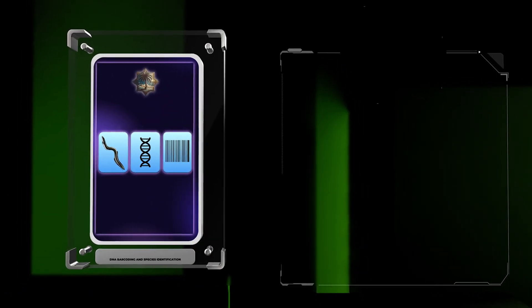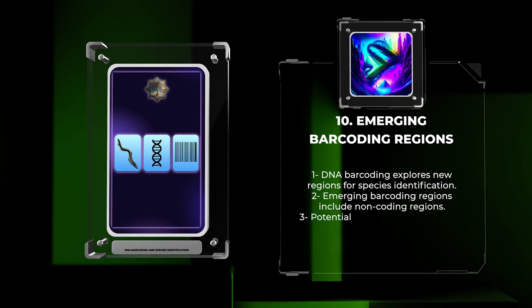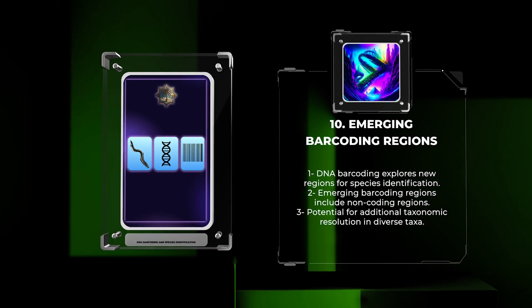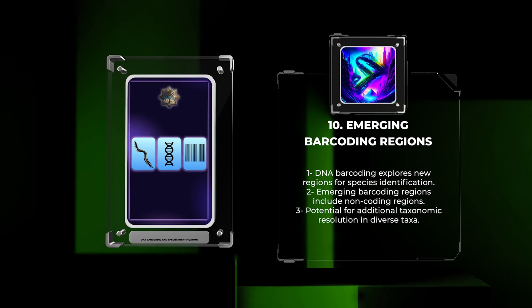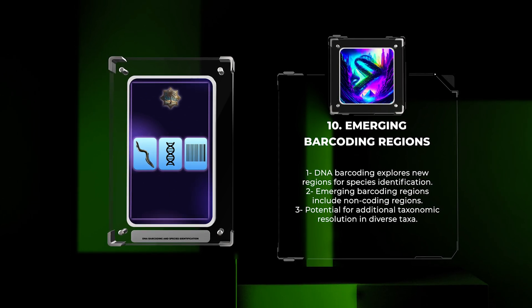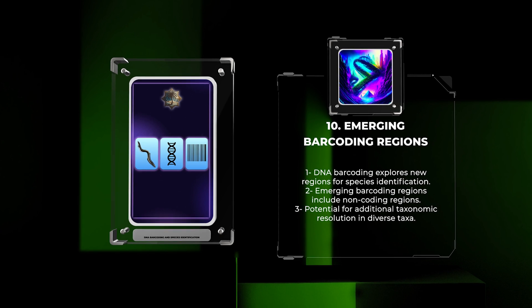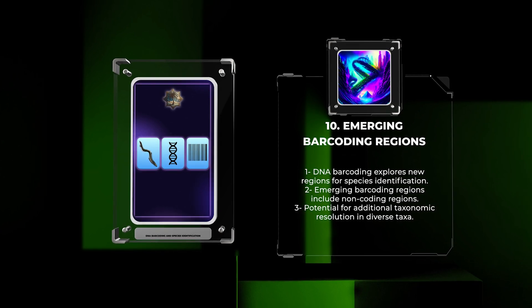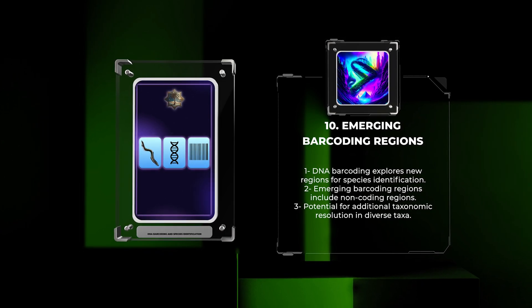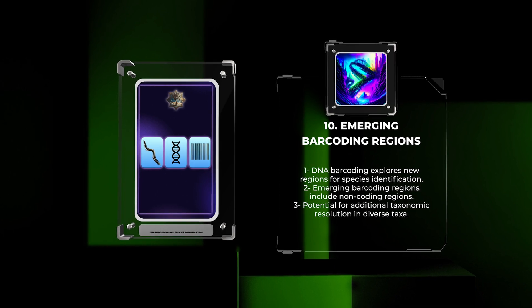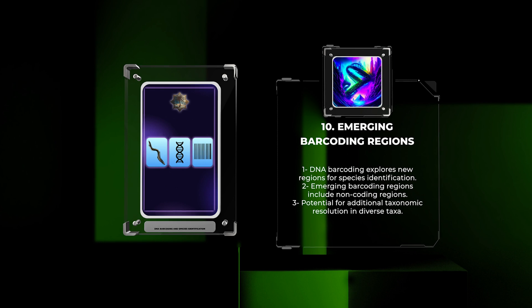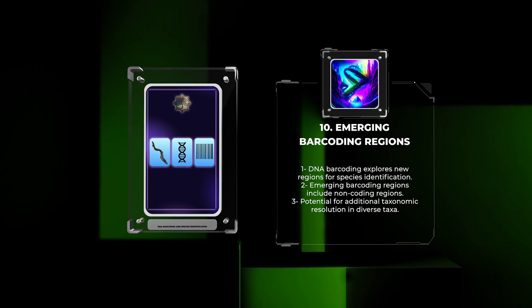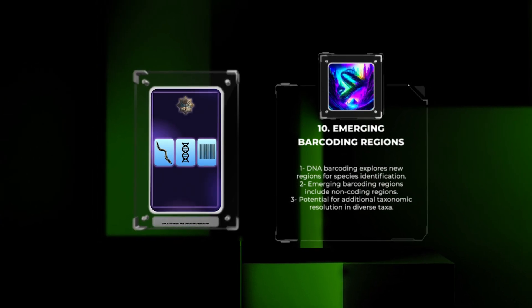As DNA barcoding evolves, researchers are continually exploring new regions for species identification. Emerging barcoding regions include non-coding regions such as intergenic spacers, microsatellites, and introns. These regions may provide additional taxonomic resolution, especially for groups where traditional barcoding regions lack sufficient variation. While the exploration of emerging barcoding regions is still ongoing, they hold potential for expanding the scope and accuracy of DNA barcoding across diverse taxa.